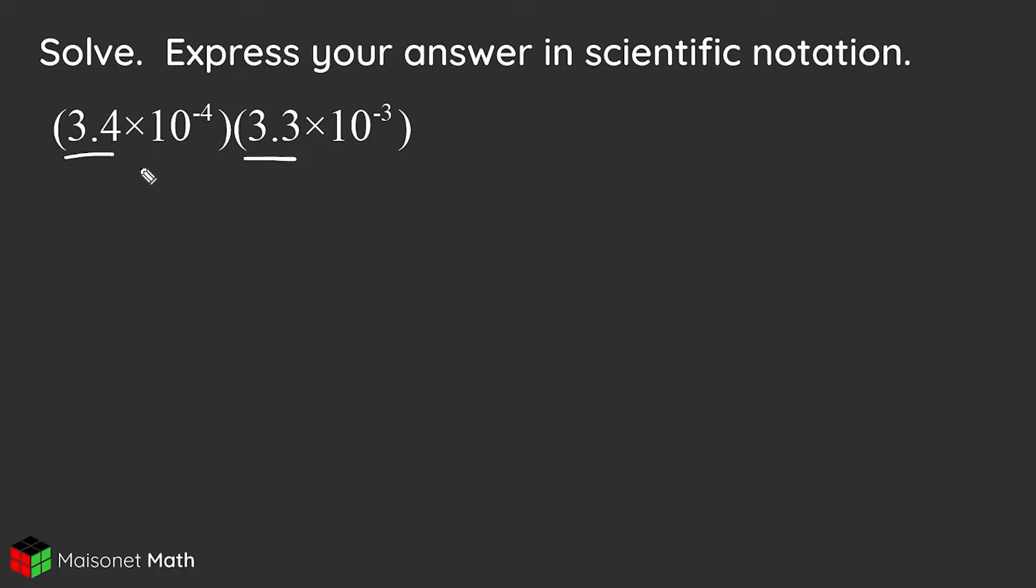Now remember, when you're multiplying a bunch of things together, you can multiply in any order that you want to, because the commutative property says we can do that.